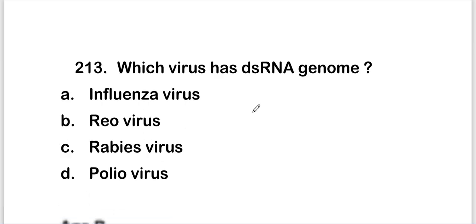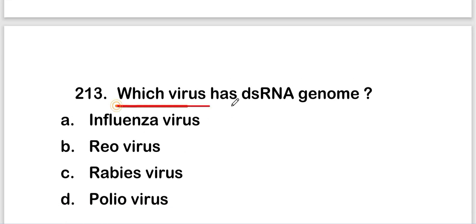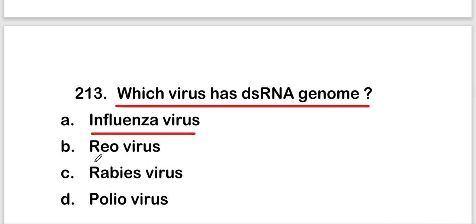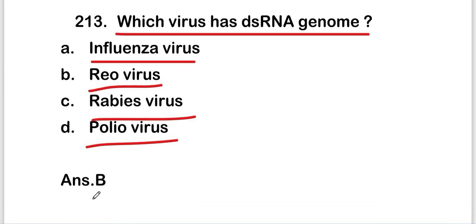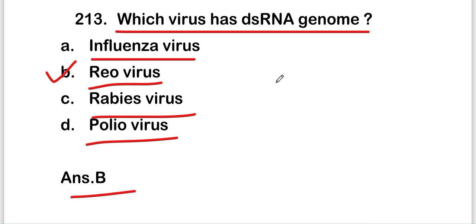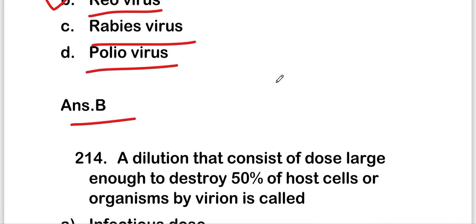The next question is: which virus has a double-stranded RNA genome? Options are influenza virus, reovirus, rabies virus, or poliovirus. The right answer is option B, that is reovirus. Reovirus is a double-stranded RNA virus.